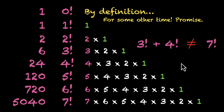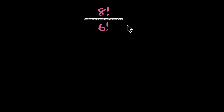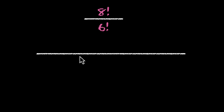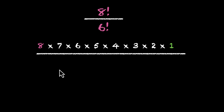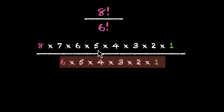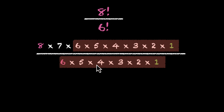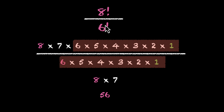One useful tip is how to simplify factorials. You might have seen factorials in both numerators and denominators. Let's look at 8 factorial divided by 6 factorial. There's no need to calculate both and then divide — a lot gets cancelled. 8! is the chain 8 down to 1, and 6! is 6 down to 1; that entire chain 6 to 1 cancels, leaving just 8 × 7 = 56.